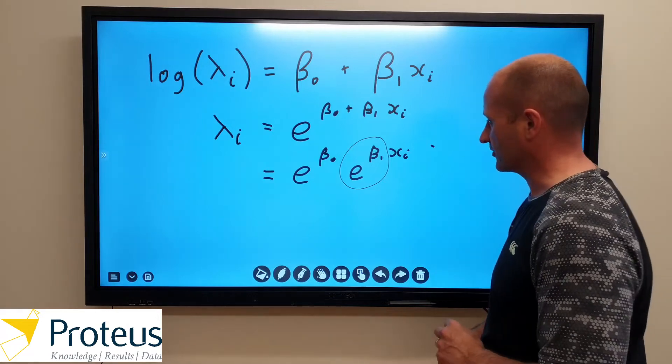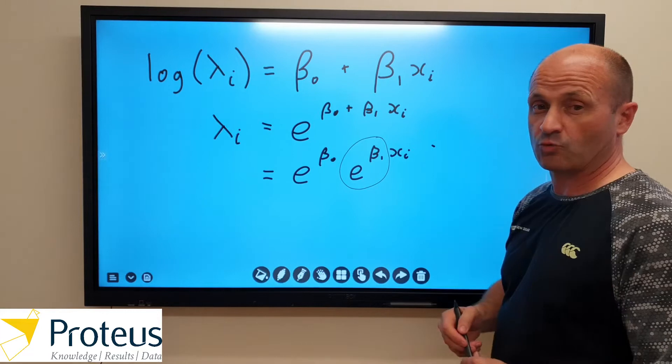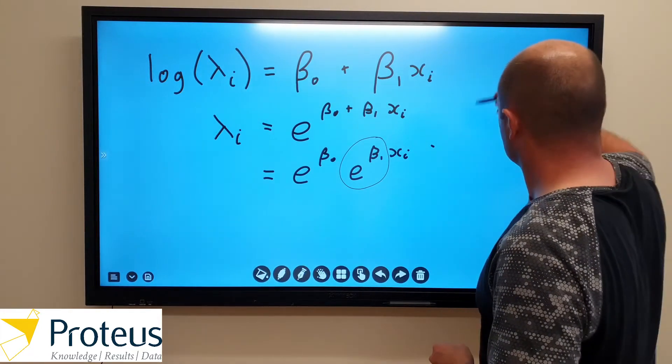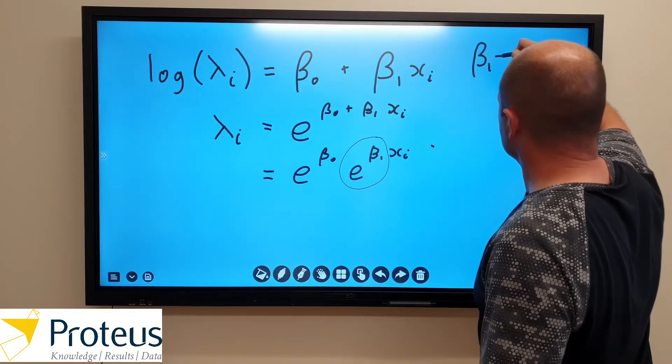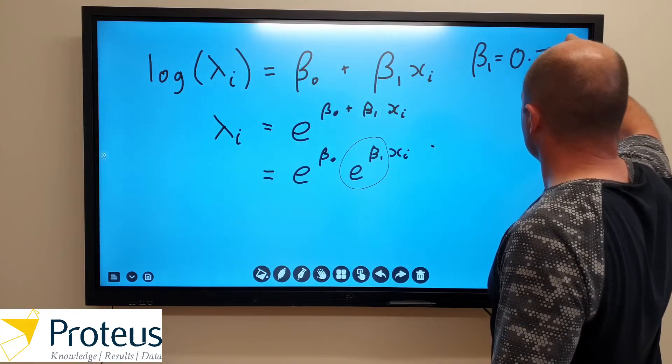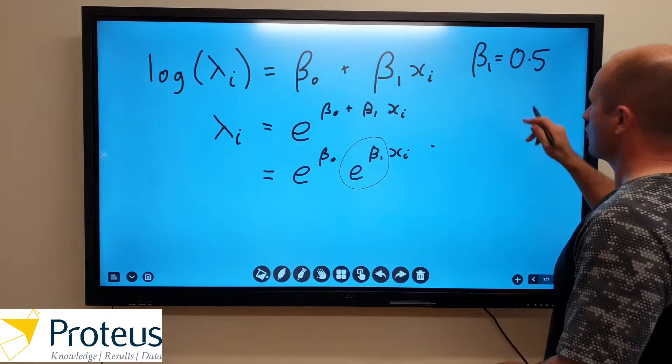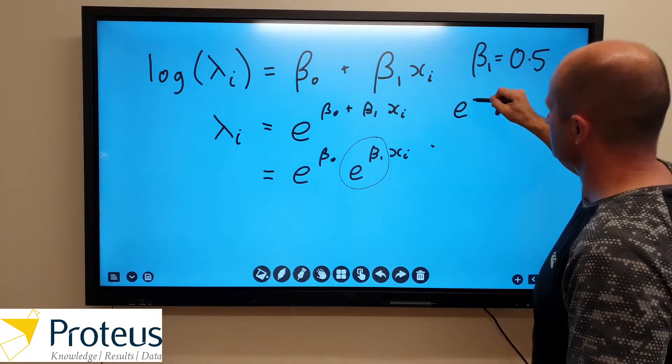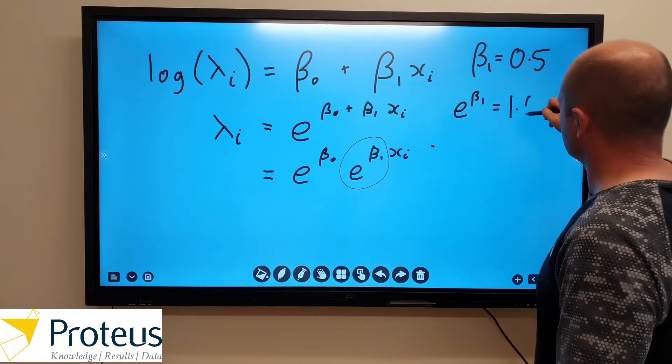And so what does that look like in practice? So let's suppose that beta 1 equals 0.5. So I'll just do it up here. If beta 1 equals 0.5, that's our estimated value, what that implies is that e to the beta 1 equals 1.65.